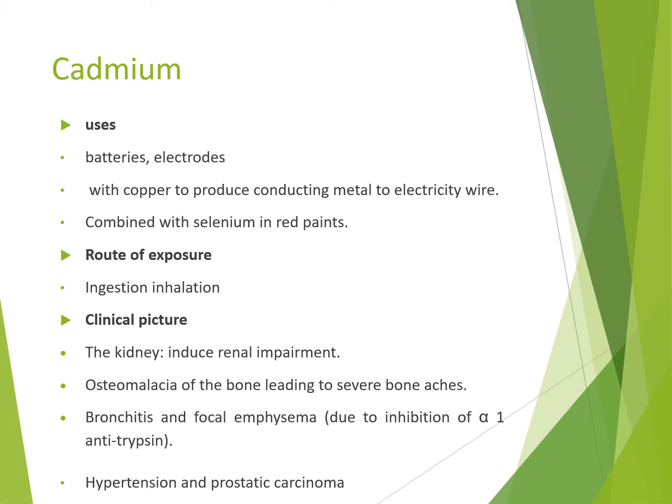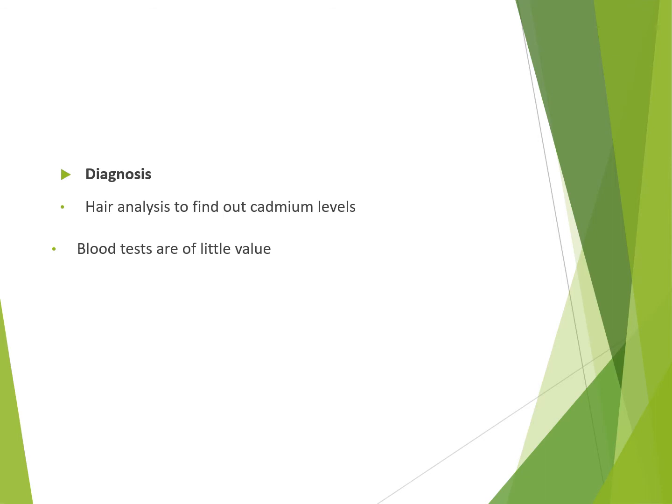برضو الكادميوم بيأثر على البروستاتا: بيعمل prostatic cancer وhypertension. التشخيص بتاع الكادميوم: بنعمل hair analysis عشان الكادميوم بيترسب في الشعر فبنلاقيه فيه. ممكن كمان نعمل blood test بس بتاعتها بتبقى قليلة عشان الـ detection بيكون صعب. يبقى هنا الكادميوم بيطلع عن طريق الـ hair analysis.